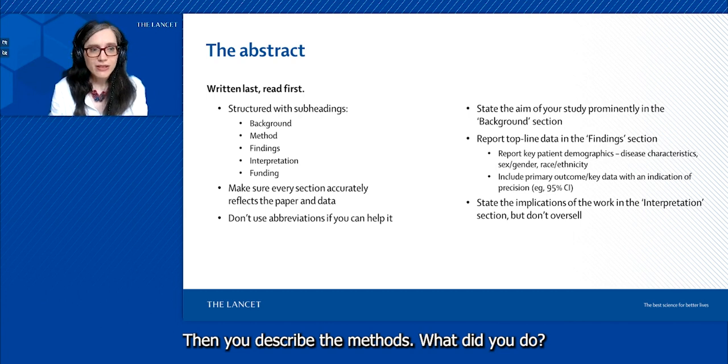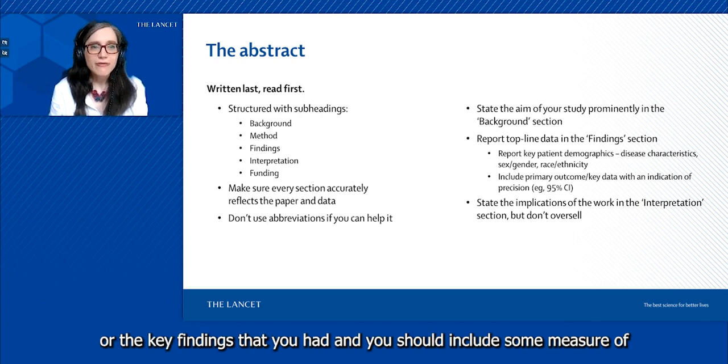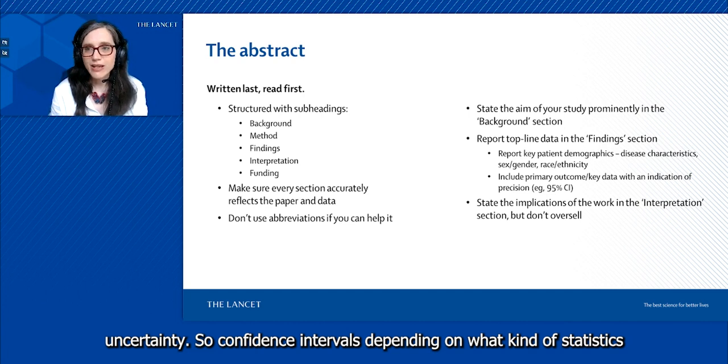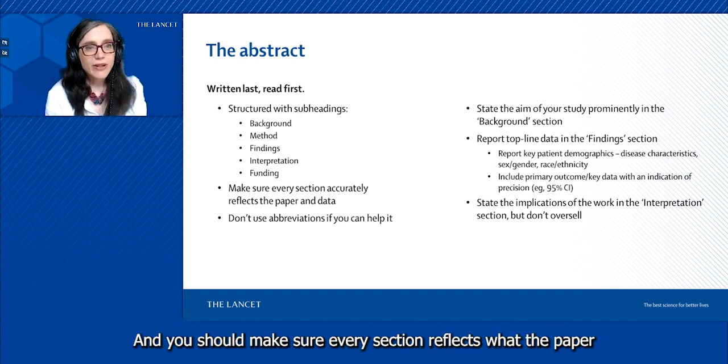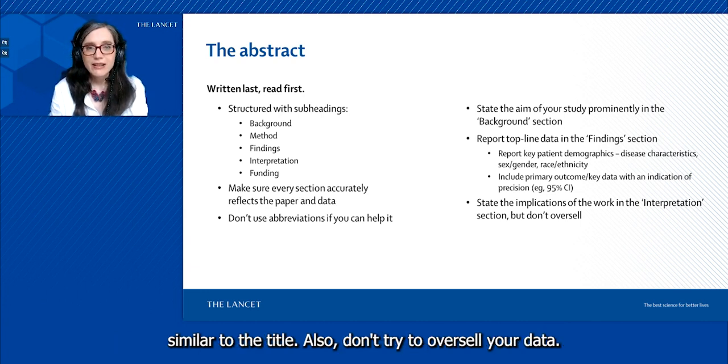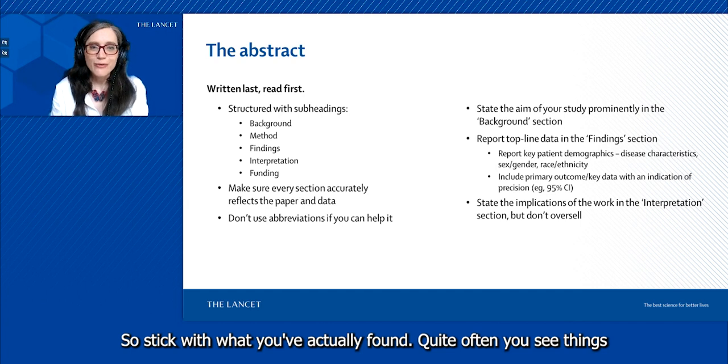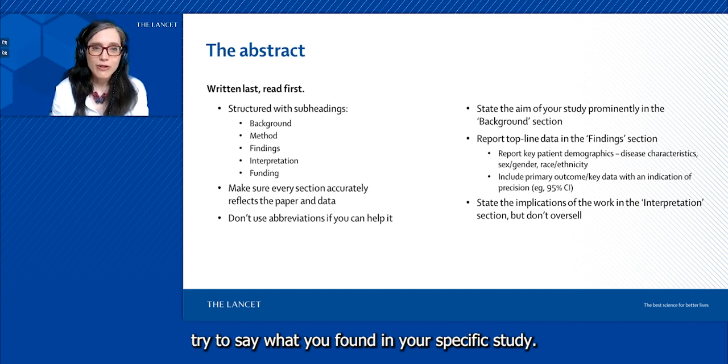In the findings, you should describe the primary outcome or the key findings that you had. You should include some measure of uncertainty, so confidence intervals depending on what kind of statistics you did. You should also mention the funding you had and make sure every section reflects what the paper and your data actually shows. If possible, don't use abbreviations, similar to the title. Don't try to oversell your data, so stick to what you've actually found.